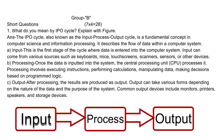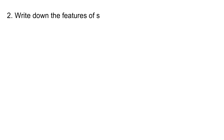B: Processing — once the data is inputted into the system, the Central Processing Unit (CPU) processes it. Processing involves executing instructions, performing calculations, manipulating data, and making decisions based on programmed logic. C: Output — after processing, the results are produced as output. Output can take various forms depending on the nature of the data and the purpose of the system. Common output devices include monitors, printers, speakers, and storage devices.